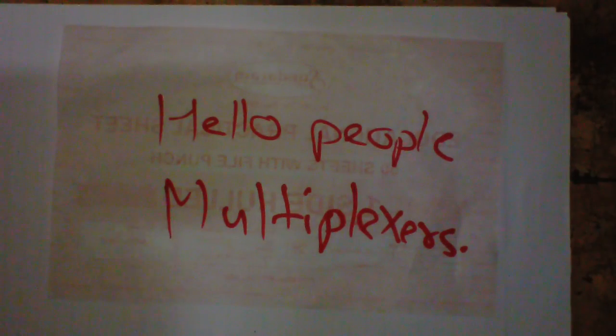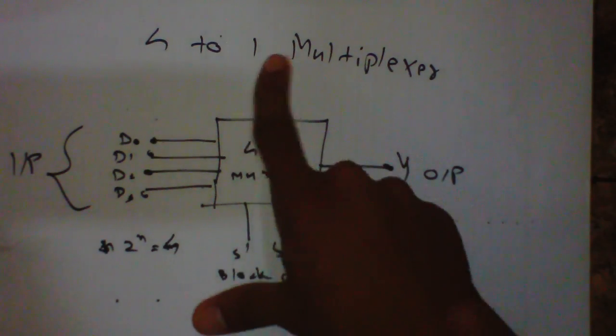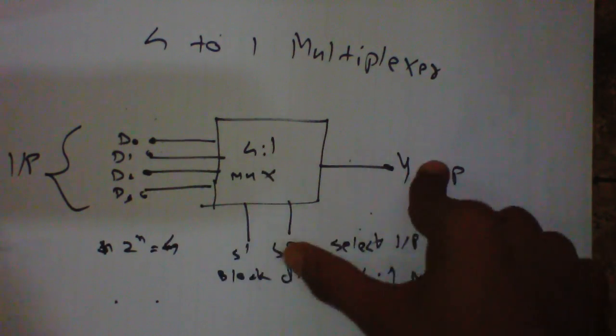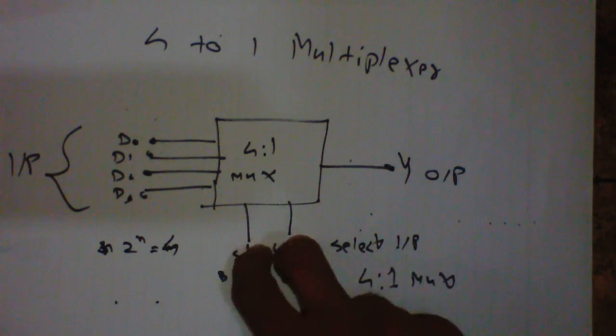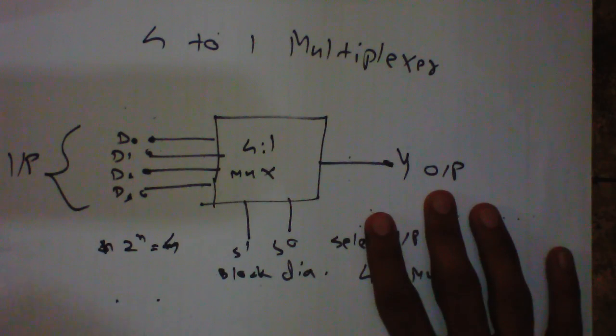Hello people, welcome to this series of multiplexer. In this series we have learned introduction to multiplexer, 2-to-1 multiplexers, and now we will learn 4-to-1 multiplexers. So I have already designed here, as name suggests, it has four inputs: D0, D1, D2, D3, and one output. Select inputs will be two according to requirement.